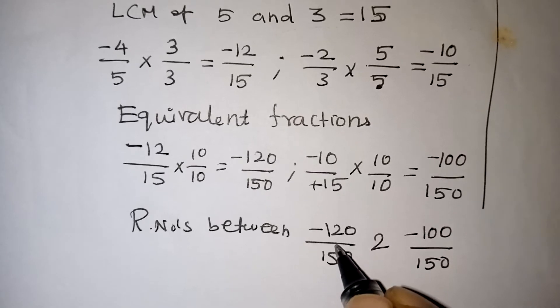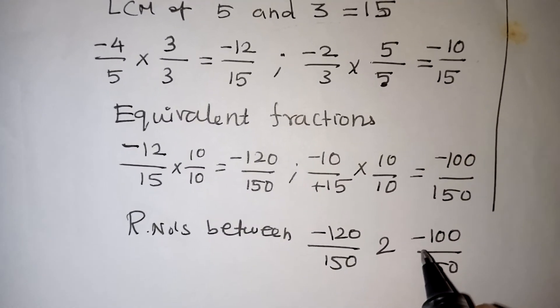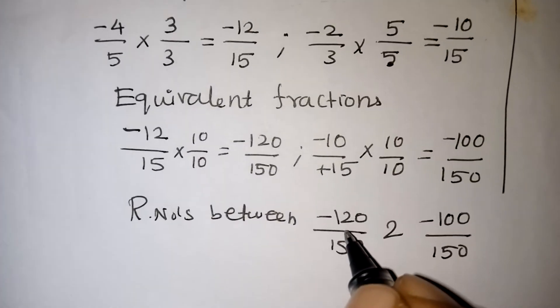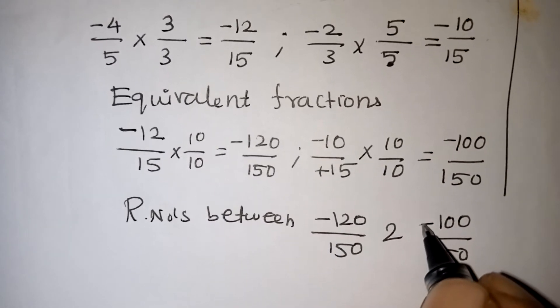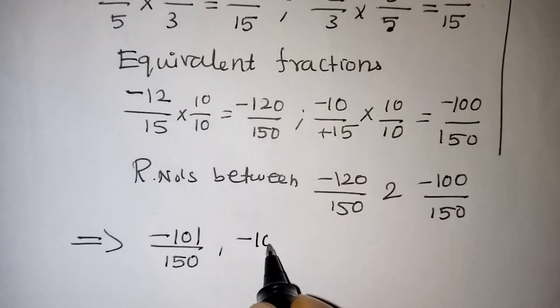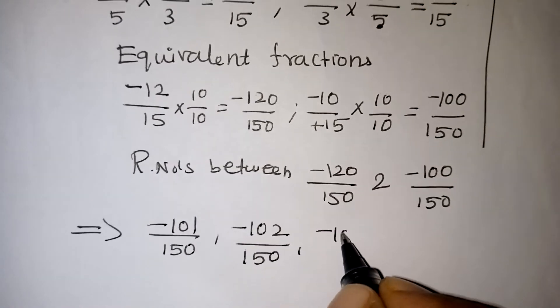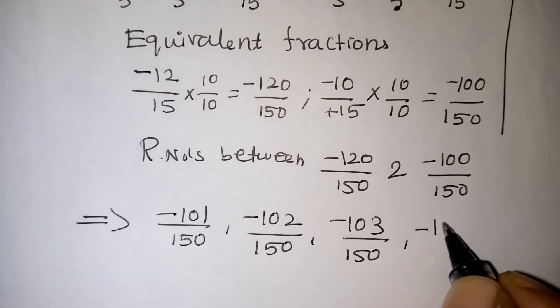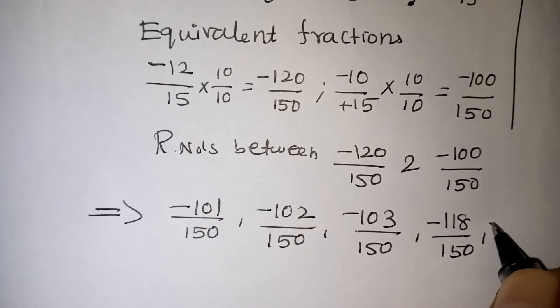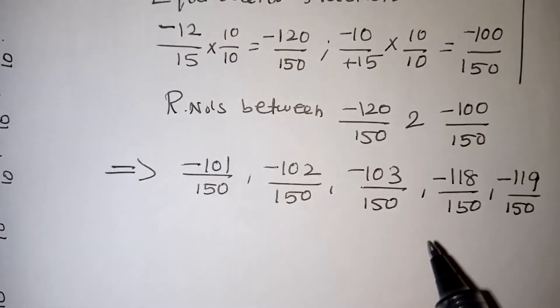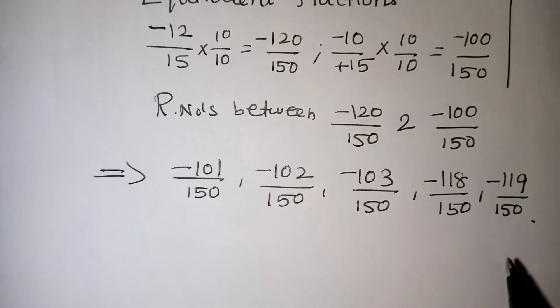Between minus 100 and minus 120 we have about 19 numbers — 101, 102, 103 up to 119 — so we can easily pick any 5. Since both are negative, all selected numbers are negative. We can write: minus 101 by 150, minus 102 by 150, minus 103 by 150, minus 118 by 150, and minus 119 by 150. It is not compulsory to take continuous numbers — any 5 numbers between these two are correct answers. These are the 5 rational numbers between the given values.